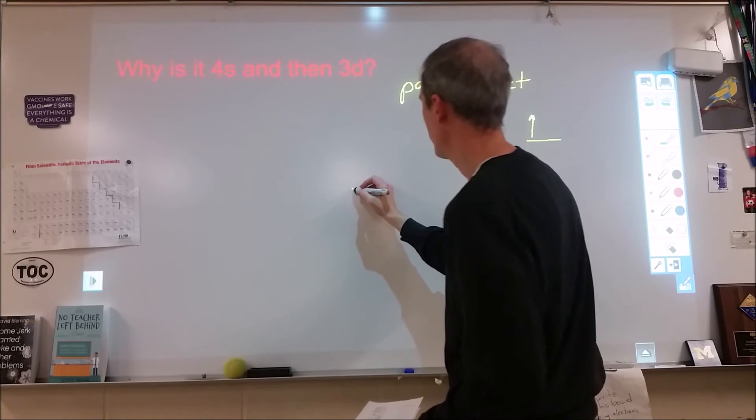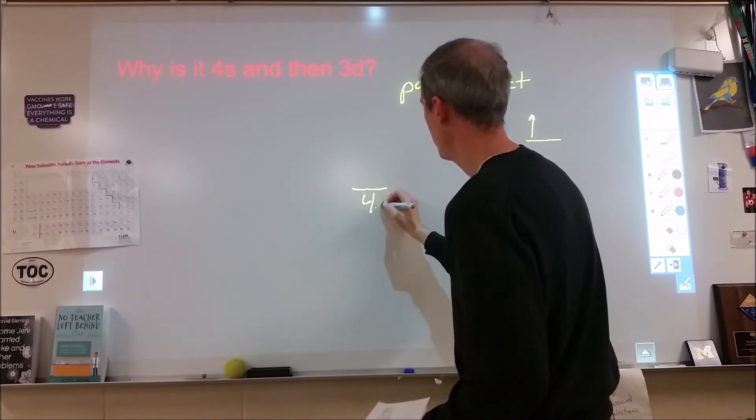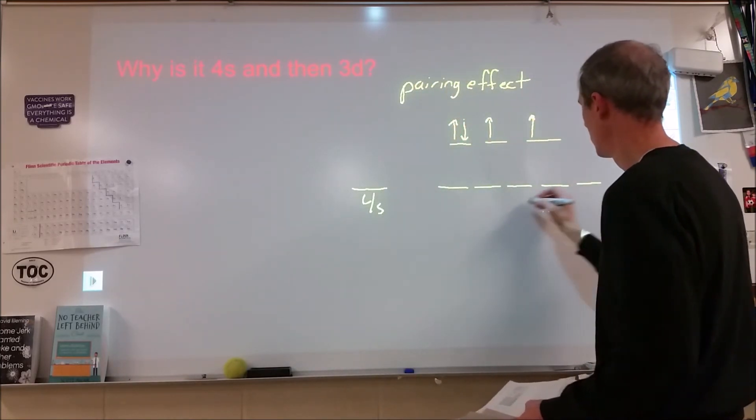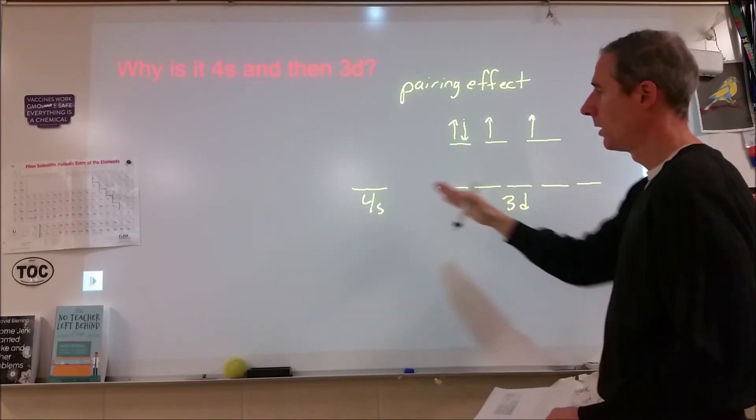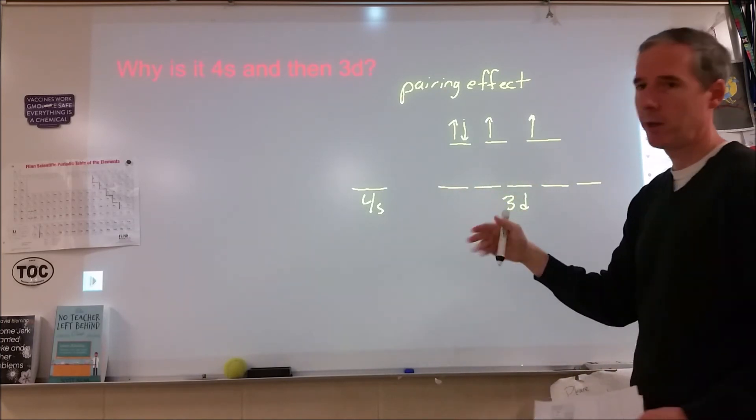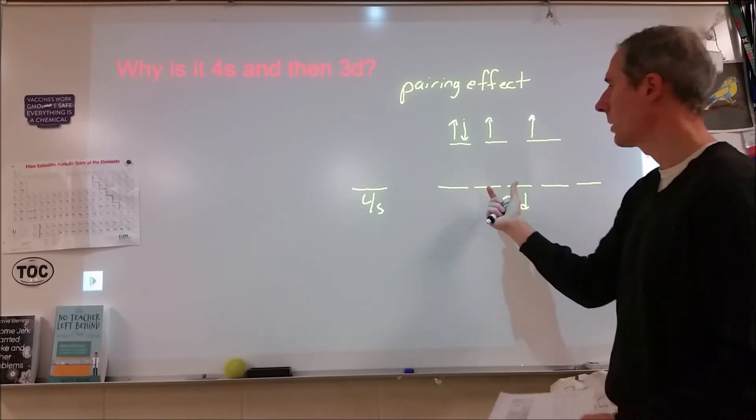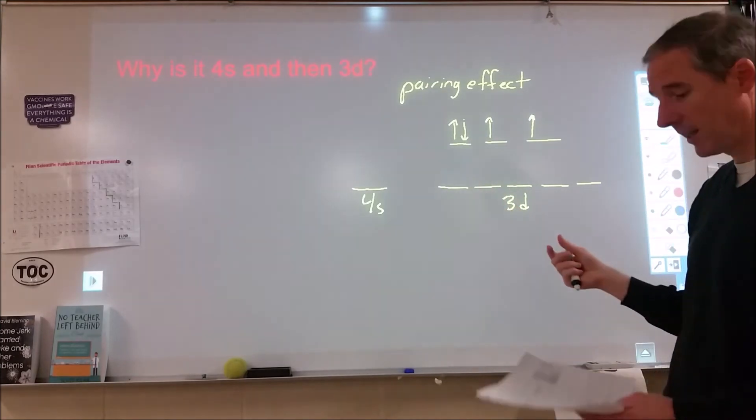And sometimes that doesn't matter because there's nothing else available. And sometimes it does because there are other options. Well, when we look at 4s and 3d, because those are so similar in energy, when everything else is full, often we see that pairing electrons can be a shift where one of these becomes favorable over the other. And it's very inconsistent.